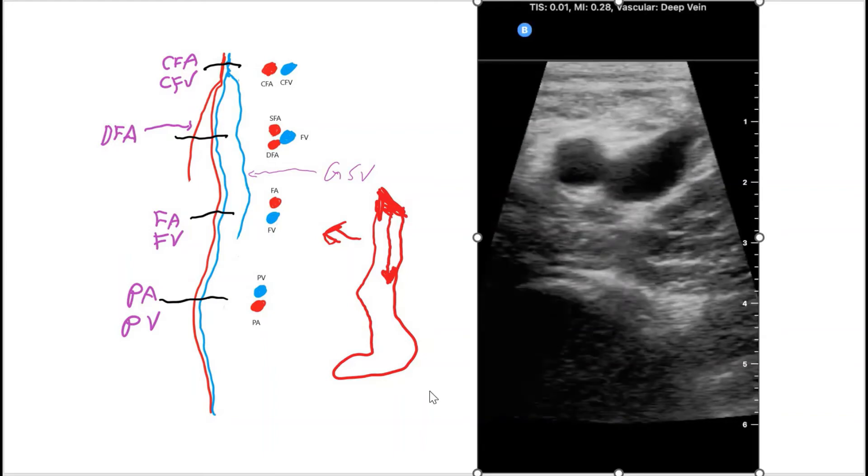As you are scanning you're also compressing down to see if the vessel completely collapses. The vein will collapse and if it collapses then that means there's no DVT. And if there is a clot it won't collapse completely. So we start scanning from the inguinal area and as you are going down we'll be compressing.